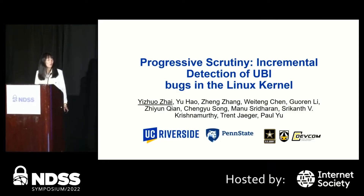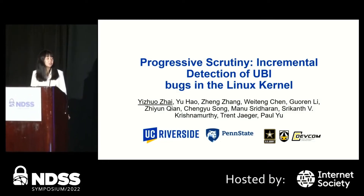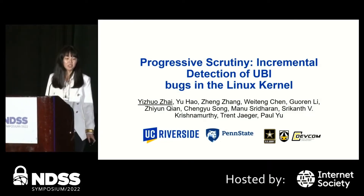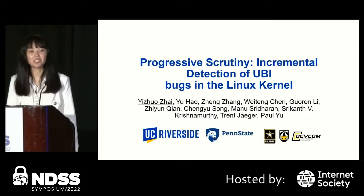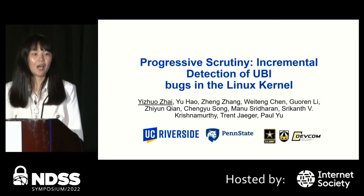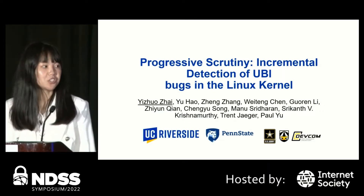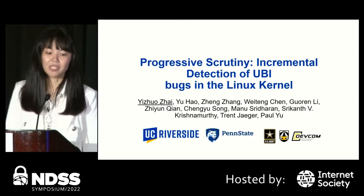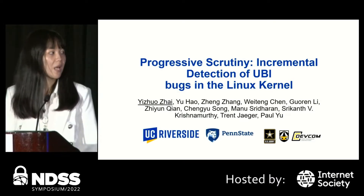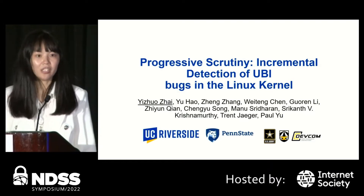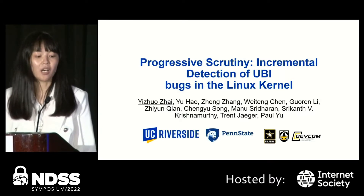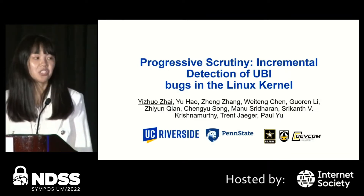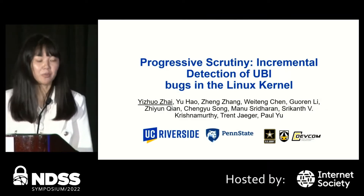I'm glad to share our work here titled Progressive Scrutiny: Incremental Detection of UBI Bugs in the Linux Kernel. I'm the first author, Yijuo, from UC Riverside, and I'm working with Zhiyun and three co-authors. This work is a joint effort from UC Riverside, Penn State University, and the U.S. Army Research Lab.